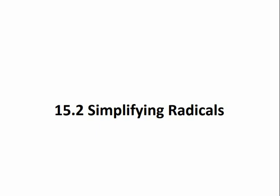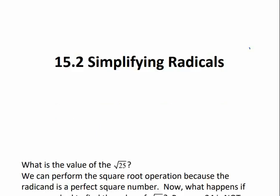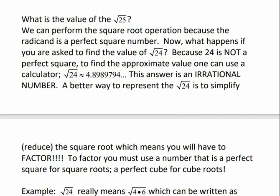15.2 Simplifying Radicals. What is the value of the square root of 25? Remember, a perfect square is any number that we can get by multiplying another number times itself. So the square root of 25 would be 5, because 5 times 5 is 25.